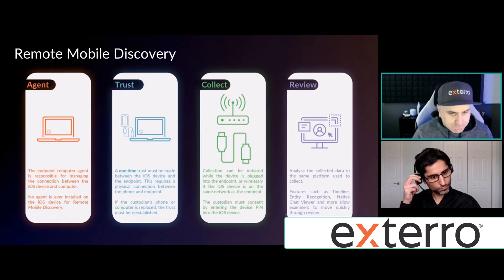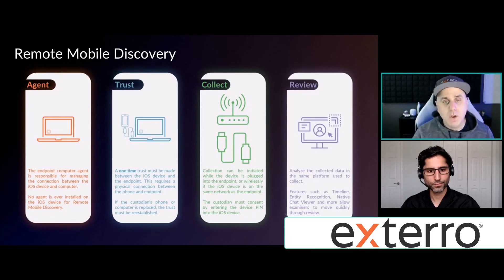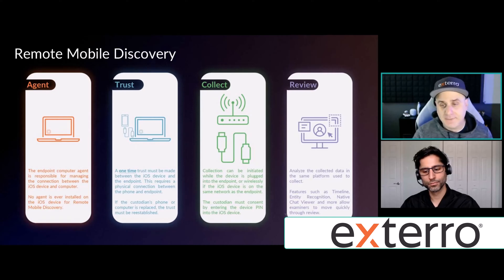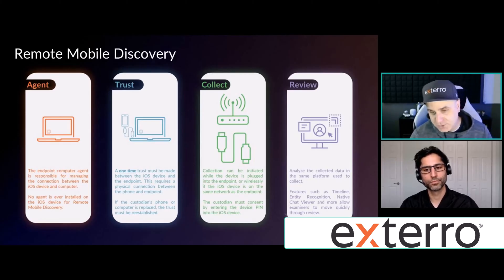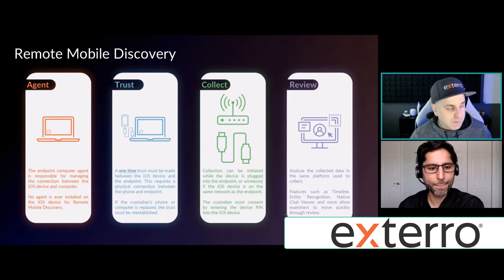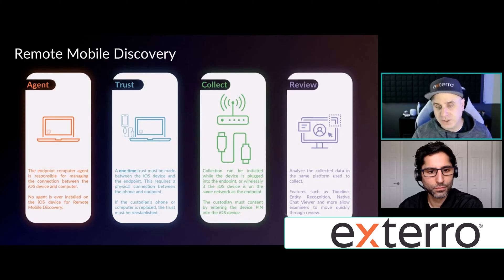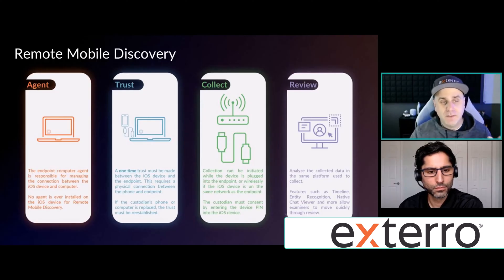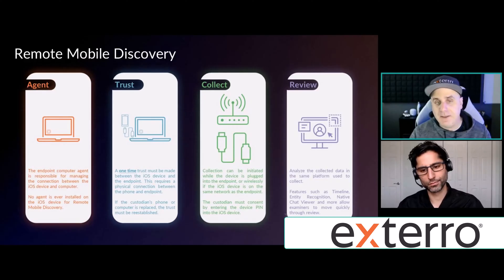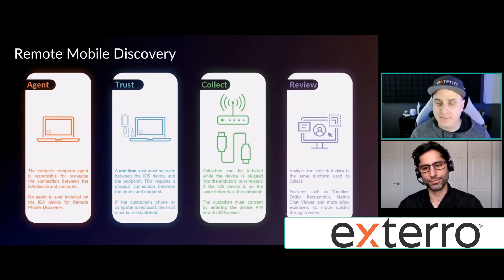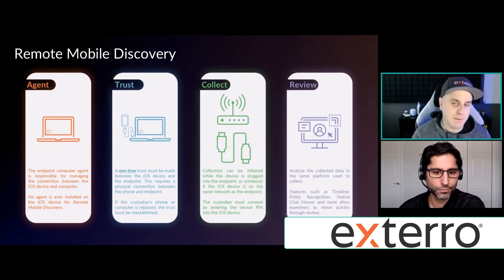You initiate a collection — for example, if I were to kick off a collection on Fahad's phone, I say I want to collect certain information, let's say only his SMS messages. We only do consent-based collection. What will happen on Fahad's phone is he will see a prompt saying, 'Please enter your device PIN to authorize this collection.' Fahad enters the PIN, the collection begins, and that information is collected to his laptop. Using our agent, that information is then sent back to your legal, IT, or forensic department for analysis.